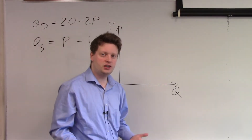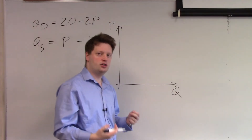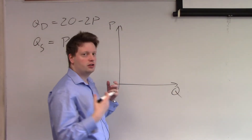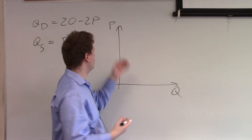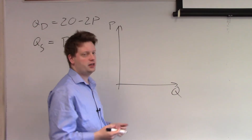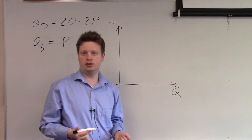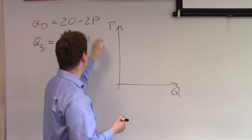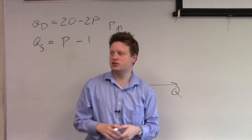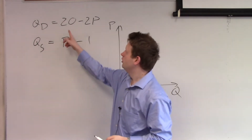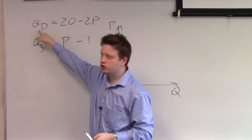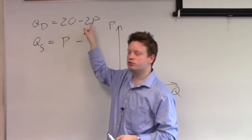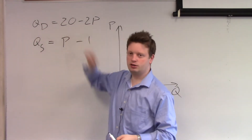This means that to properly plot them we need to get an equation where P is equal to something. So we need to flip these two equations — instead of Q equal to something, we need to have P equal to something.